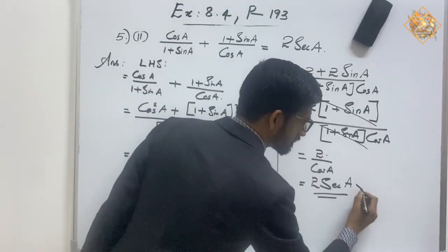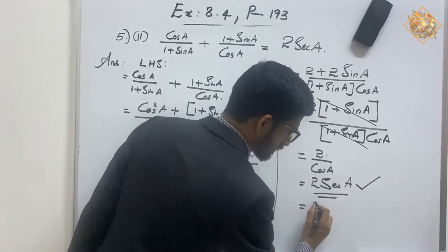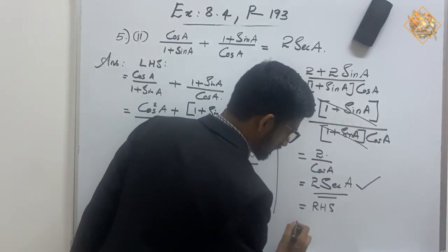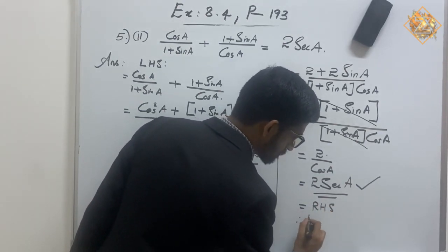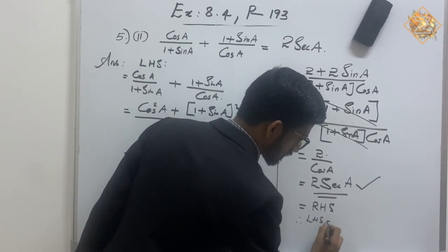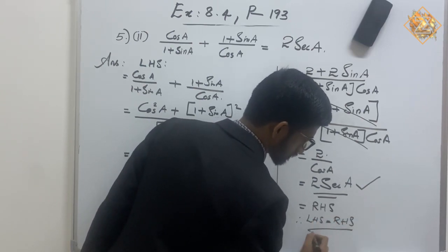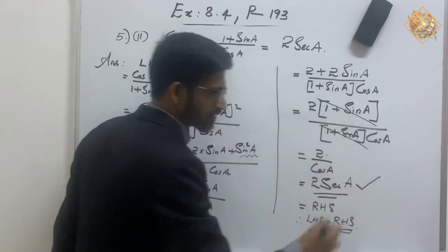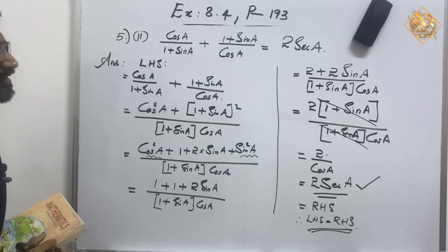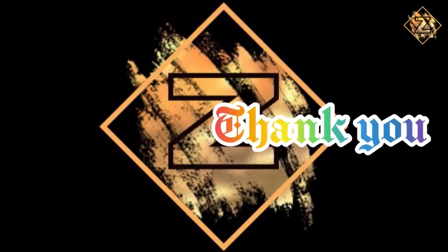This is the required RHS. Therefore, LHS = RHS, hence proved. Please write this neatly in your notebook, students.